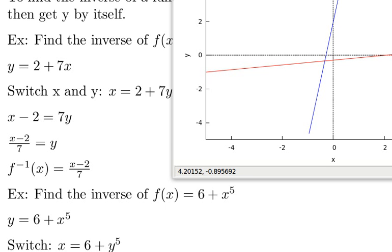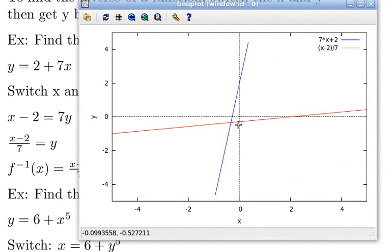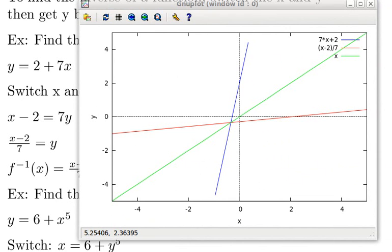What we actually did was we flipped this around. This green line is f(x) = x. And whenever we are finding the inverse of a function, what we're doing is we're flipping it around this f(x) = x. You can kind of see how this blue line and this red line are kind of mirror images of each other across the green line.